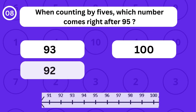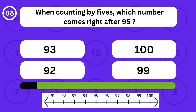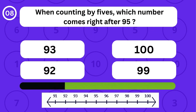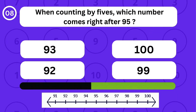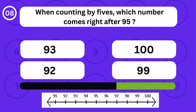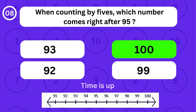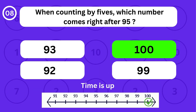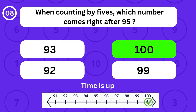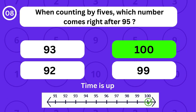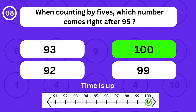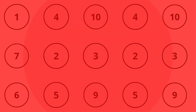When counting by fives, which number comes right after 95? When counting by fives, the number 100 comes right after 95.